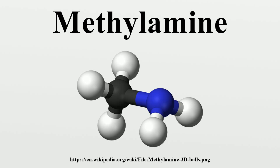One method entails treating formaldehyde with ammonium chloride: NH4Cl + H2CO → CH2=NH2Cl + H2O, then CH3NH3Cl + HCOOH. The colorless hydrochloride salt can be converted to the amine by the addition of a strong base like NaOH: CH3NH3Cl + NaOH → CH3NH2 + NaCl + H2O. Another method entails reducing nitromethane with zinc and hydrochloric acid.